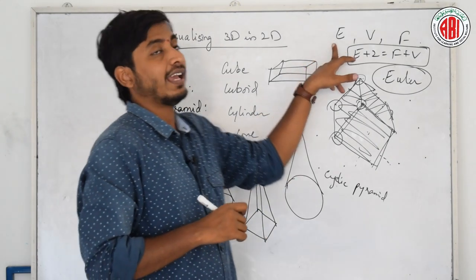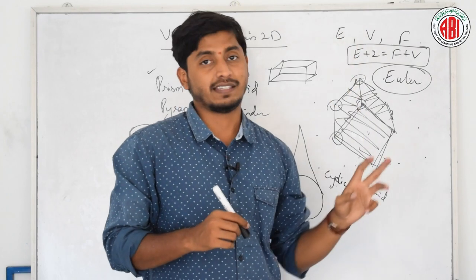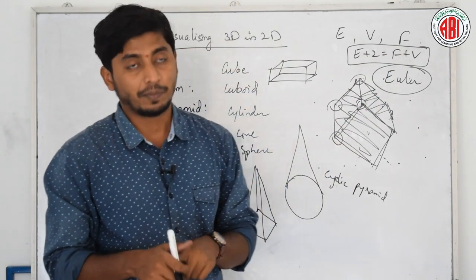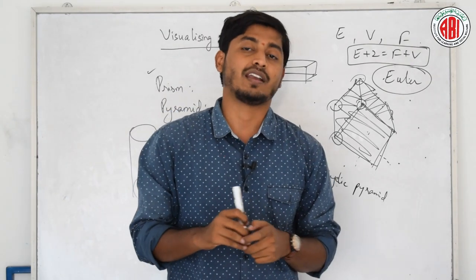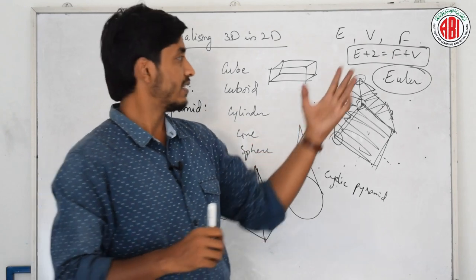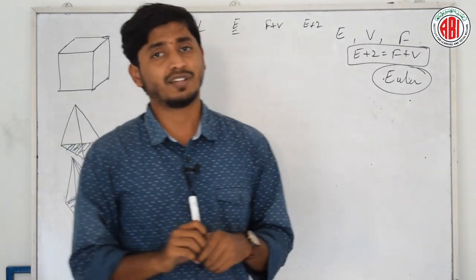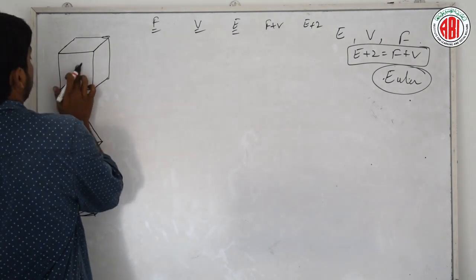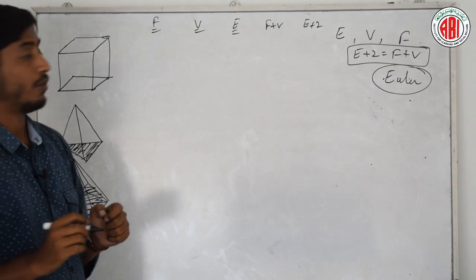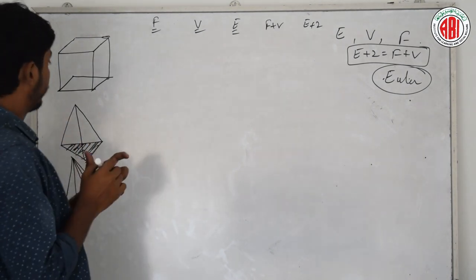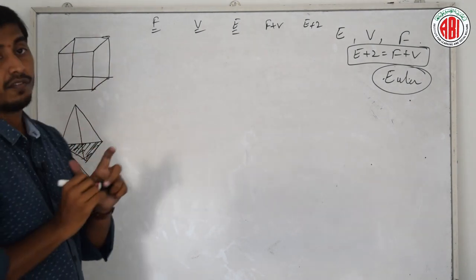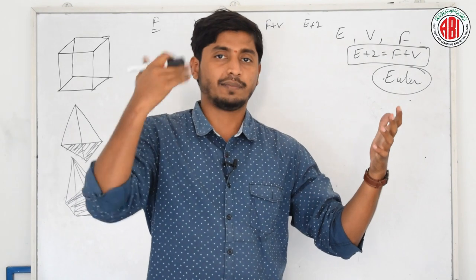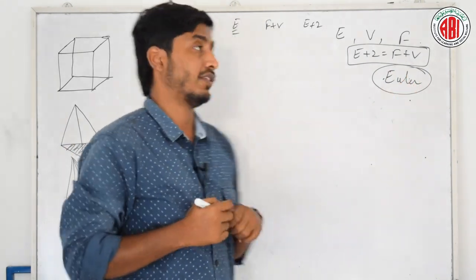Shall we verify this relation for few solids? This is a cube. How many faces does a cube have? Face is the side. For example, if this room is a cube, I will have left face, right face, top, bottom, front, back. 1, 2, 3, 4, 5, 6. Therefore, it has 6 faces.